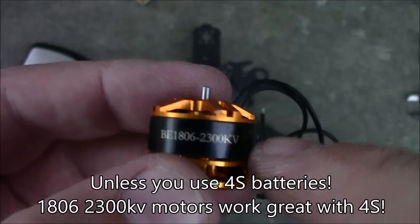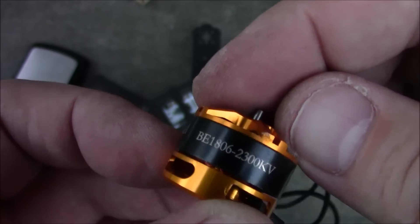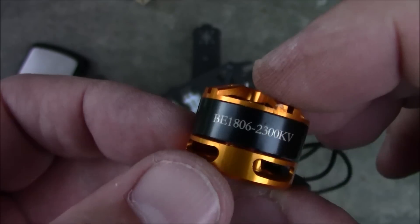I know there's some places now that are making 1806 3200 KV motors. 3200 would just be insane. And I think the prices on those are pretty high right now just because they're not very popular yet.